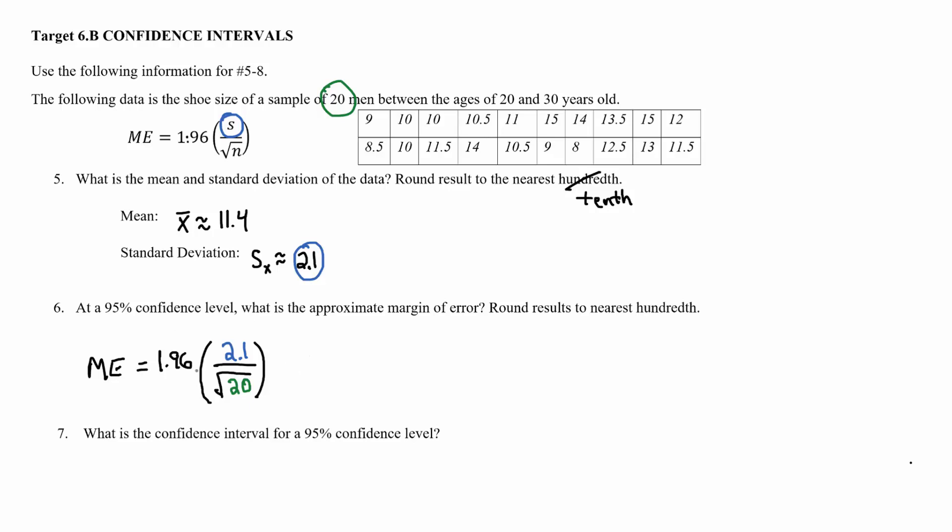And after that I'm going to plug this equation right here into the calculator exactly as I see it. It's got to be 1.96 times and then a fraction with 2.1 in the top part and then the square root of 20 in the denominator. That kicks out about 0.9.